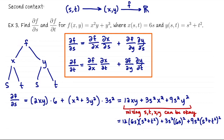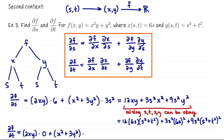Let me just write down ∂F/∂T. It equals (∂F/∂X)(∂X/∂T) + (∂F/∂Y)(∂Y/∂T) = (2XY)(0) + (X^2 + 3Y^2)(2T), since ∂X/∂T = 0 and ∂Y/∂T = 2T. That's it for today's discussion of the chain rule. See you next time.